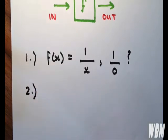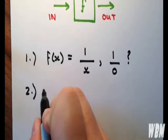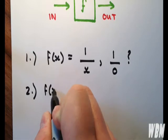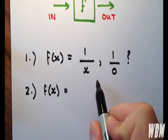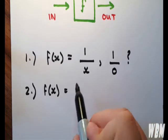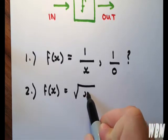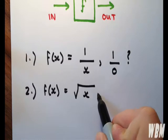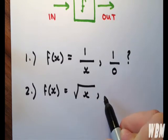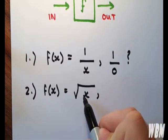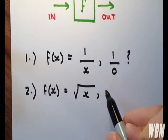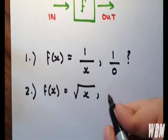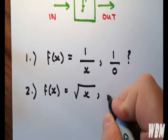The second thing you have to look out for is if you're given a square root in your function. You want to make sure that the x inside the square root isn't negative, because taking a square root of a negative doesn't really work as far as we're concerned.